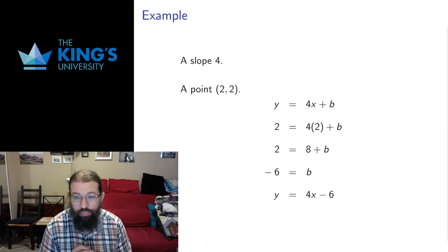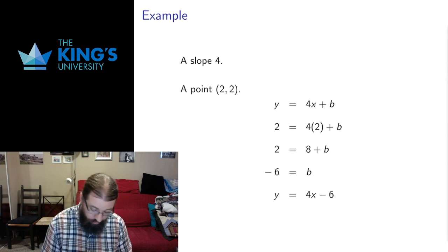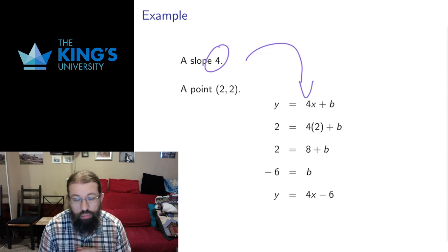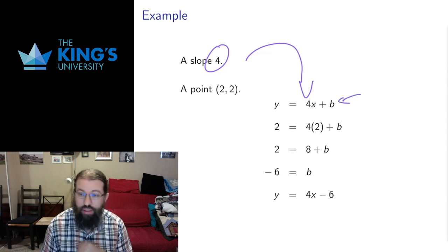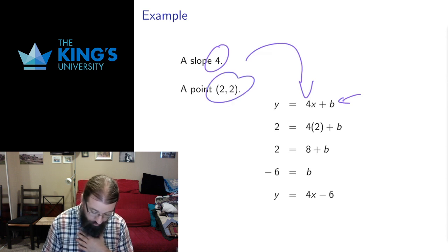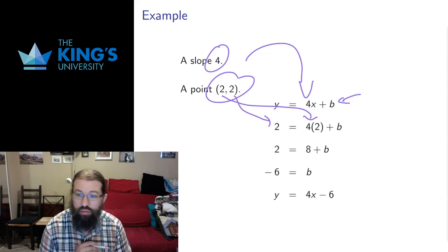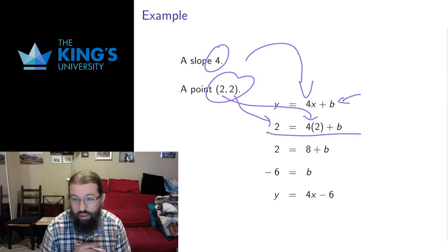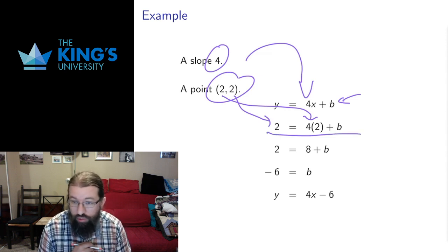If we're given a slope and a point, it's not quite as straightforward. We can still take the slope and put it in where m would be in the slope-intercept form, but then b is unknown. However, we have this point and we can take the y-coordinate and put it in for y, and the x-coordinate and put it in for x, because the point has to satisfy the equation. Then the only unknown is the intercept b, and we can solve for it.